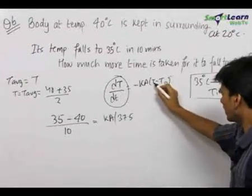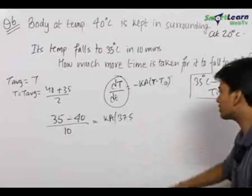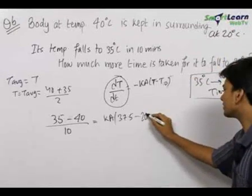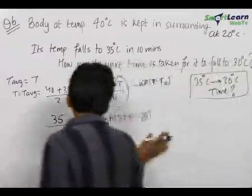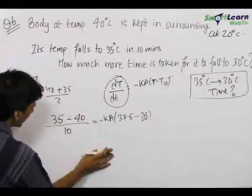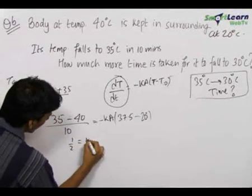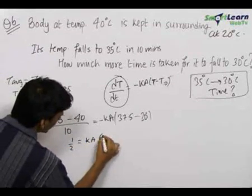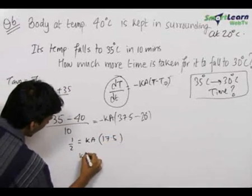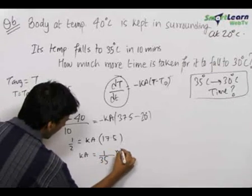Since the temperature of the substance was not constant, we use the average value minus the surrounding temperature, which is given as 20°C. There is a minus sign here as well. So we get 1/2 equals KA into 17.5, which gives KA equal to 1/35 minute inverse.